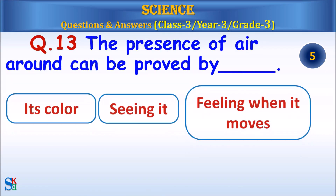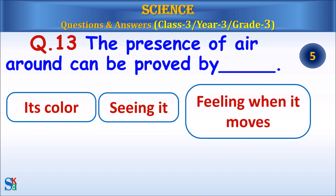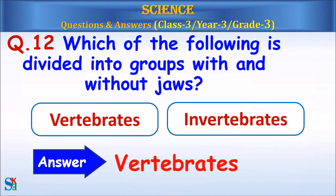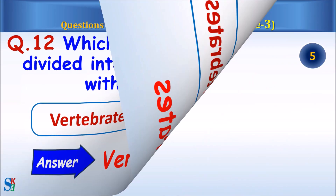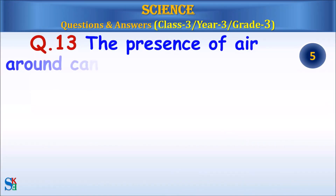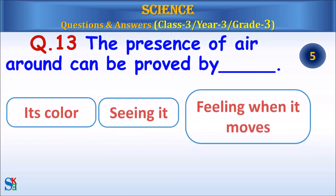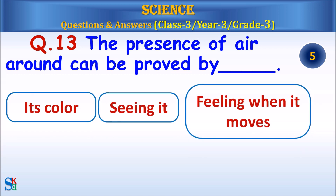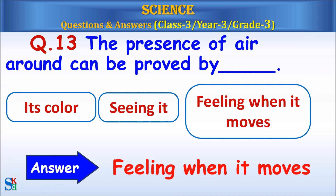Question 13: The presence of air around us can be proved by — its color, seeing it, or feeling when it moves? Answer: Feeling when it moves.